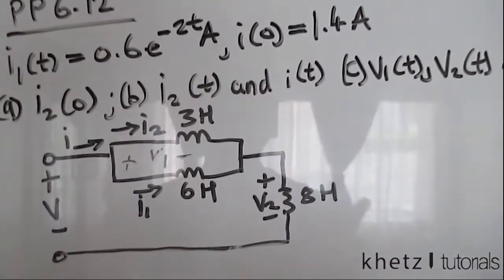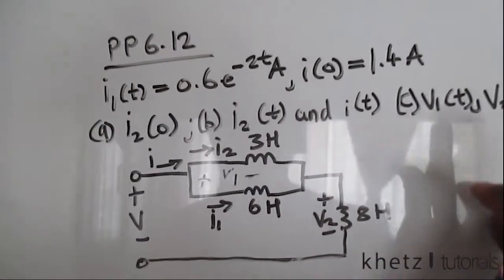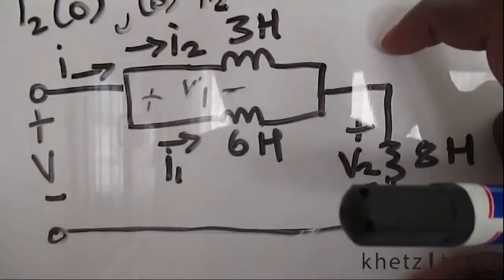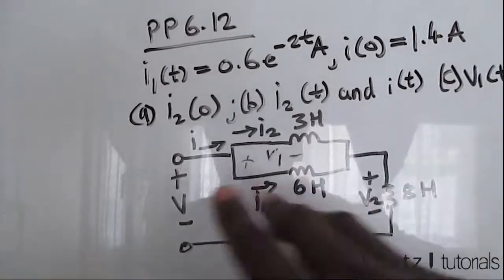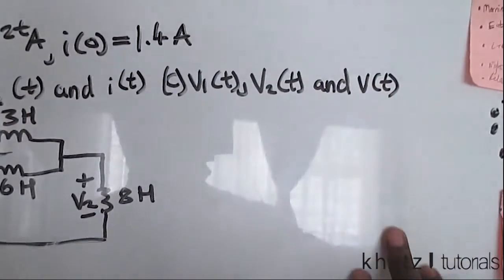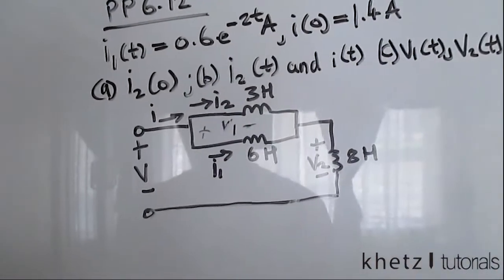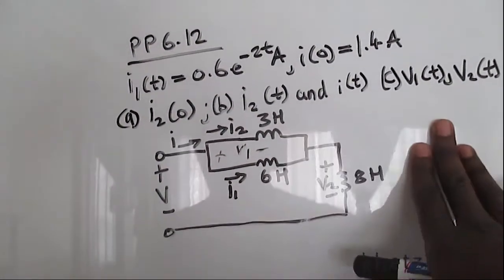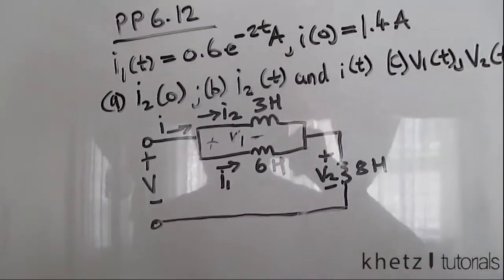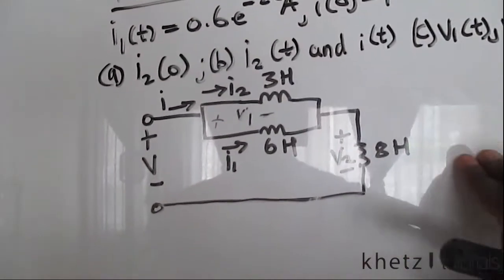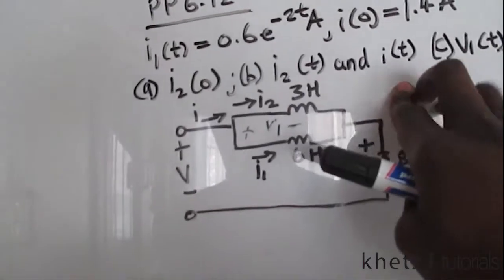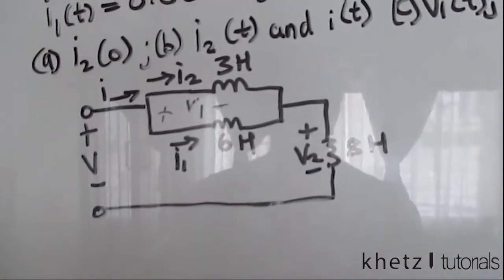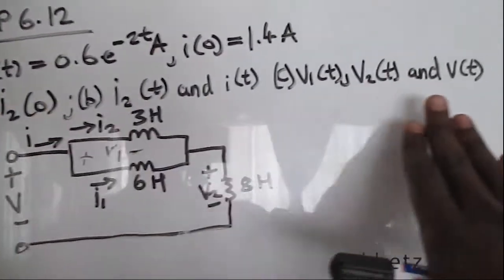Welcome to guest tutorials. In this video I'll be covering practice problem 6.12. This particular circuit is accompanied by a bunch of variables and we are asked to find a lot of things. I'm not actually going to follow the exact order because some of these help us find variables which come before others in the question. In the end we would have solved everything we're asked to find.